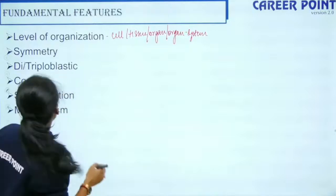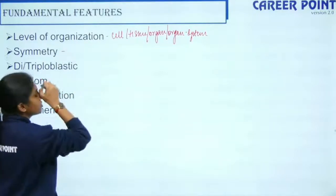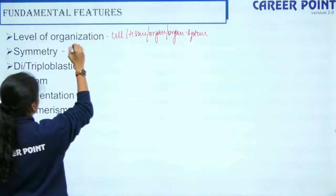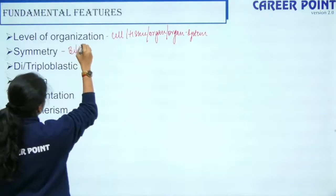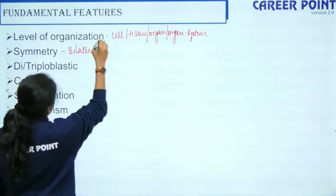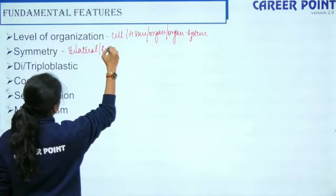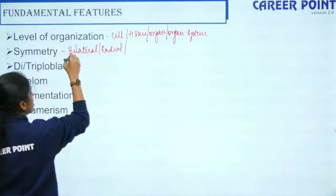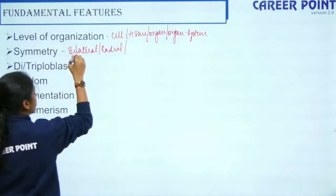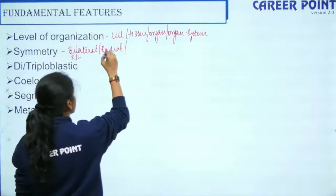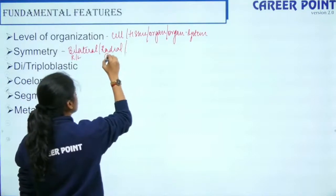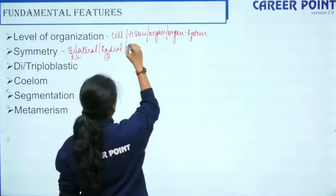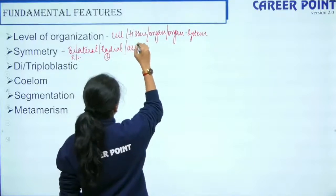The second point is symmetry — what kind of symmetry it has. It can have bilateral symmetry, which gives you equal right and left halves, or radial symmetry, which gives you two equal halves through any plane, or it can be asymmetric.